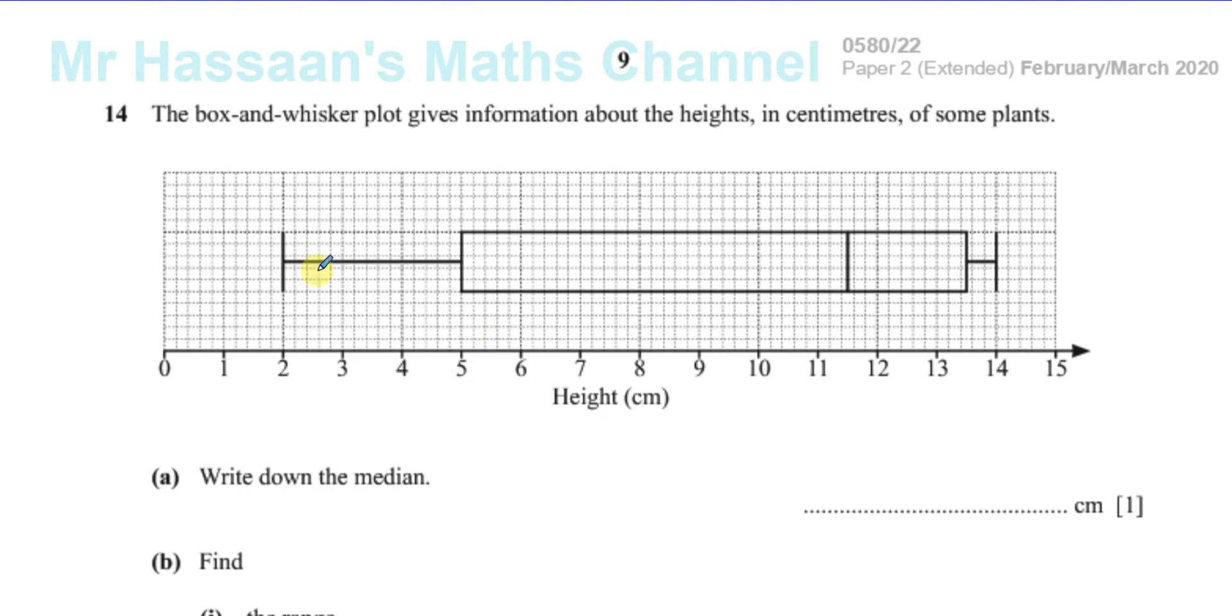Write down the median. So a box and whisker plot basically gives you five key pieces of information. And these vertical lines, you've got the first, the second, the third, the fourth and the fifth, these tell us those key pieces of information.